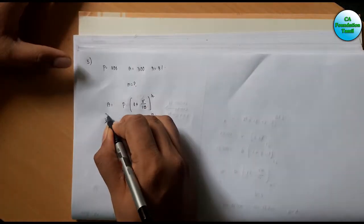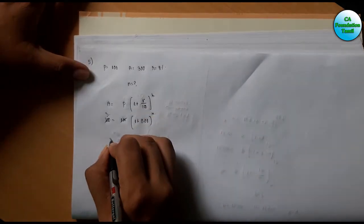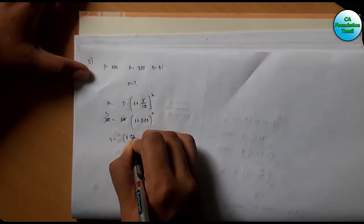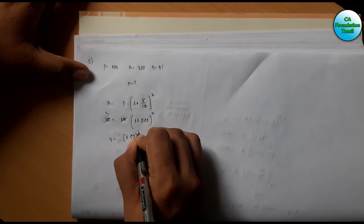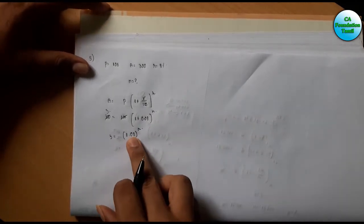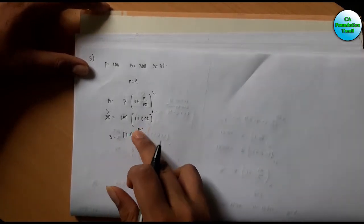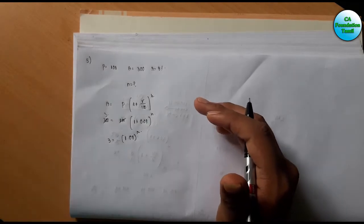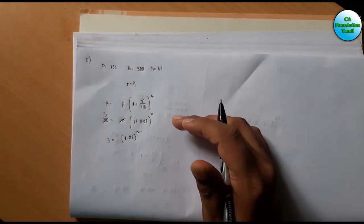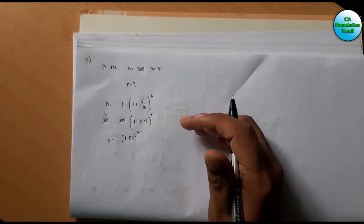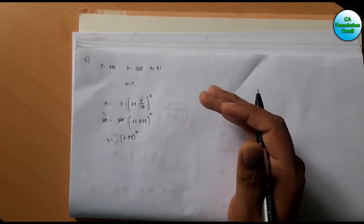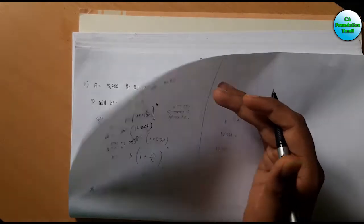So the equation becomes 3 equals 1.08 to the power N. Now let's check the options: Option A is 14.28 years, Option B is 14 years, Option C is 12 years. Starting with Option C, check 1.08 to the power 12.